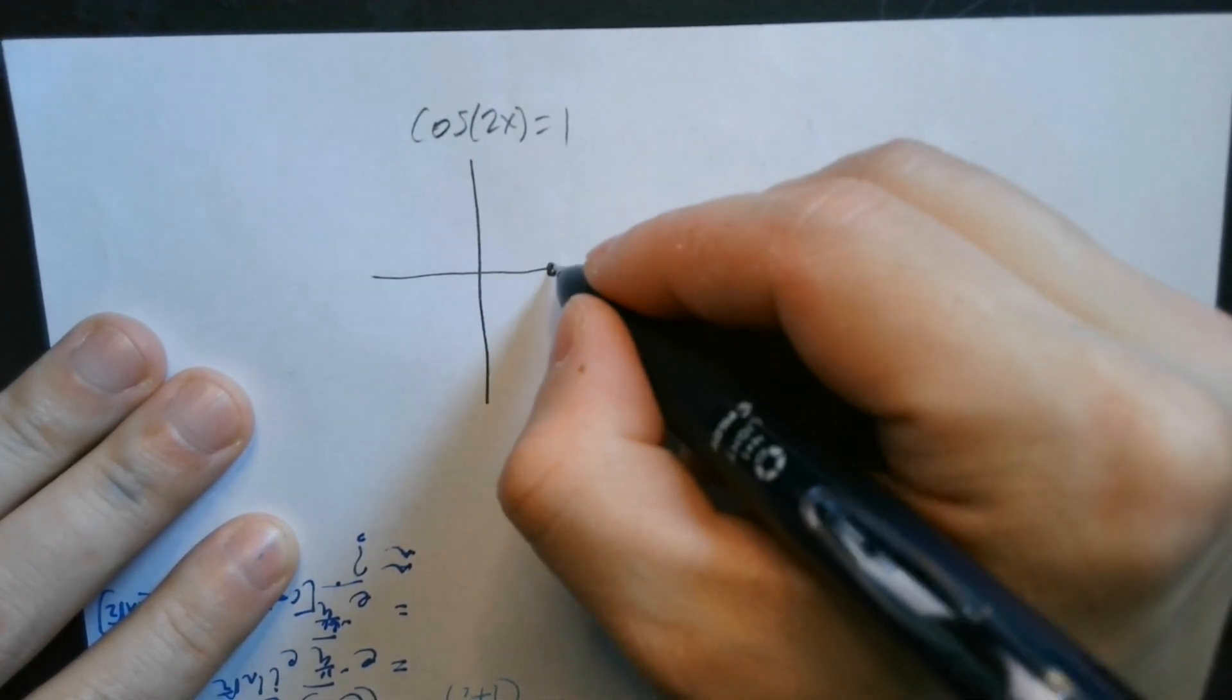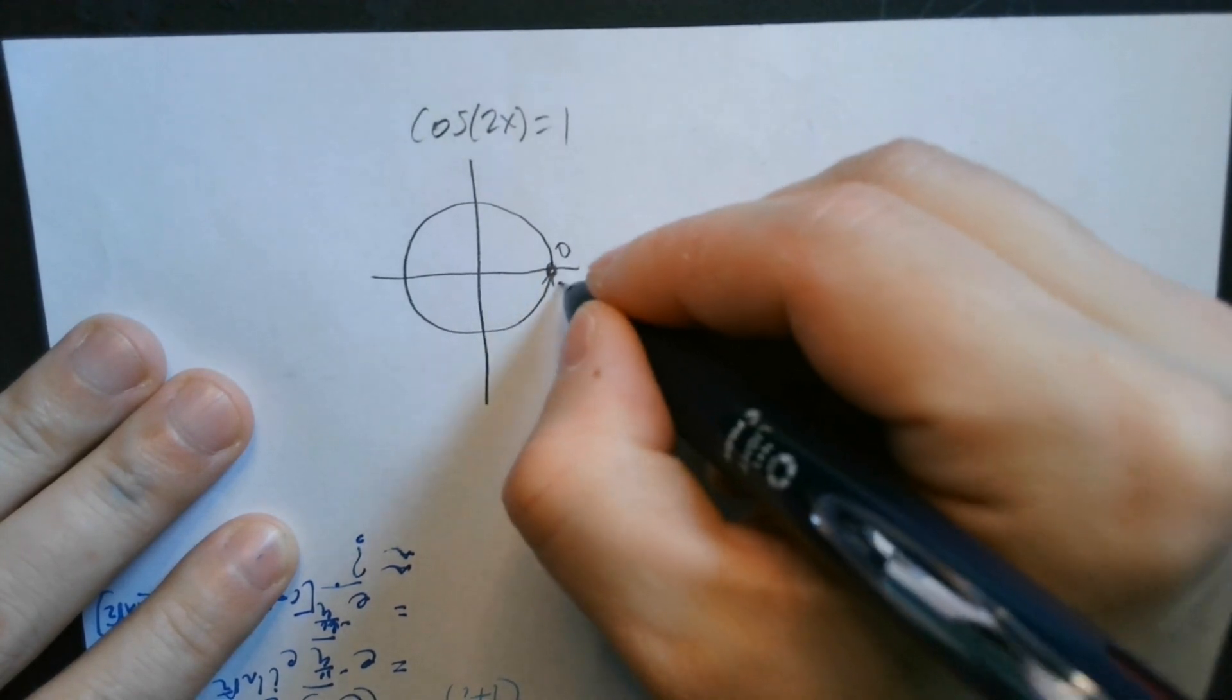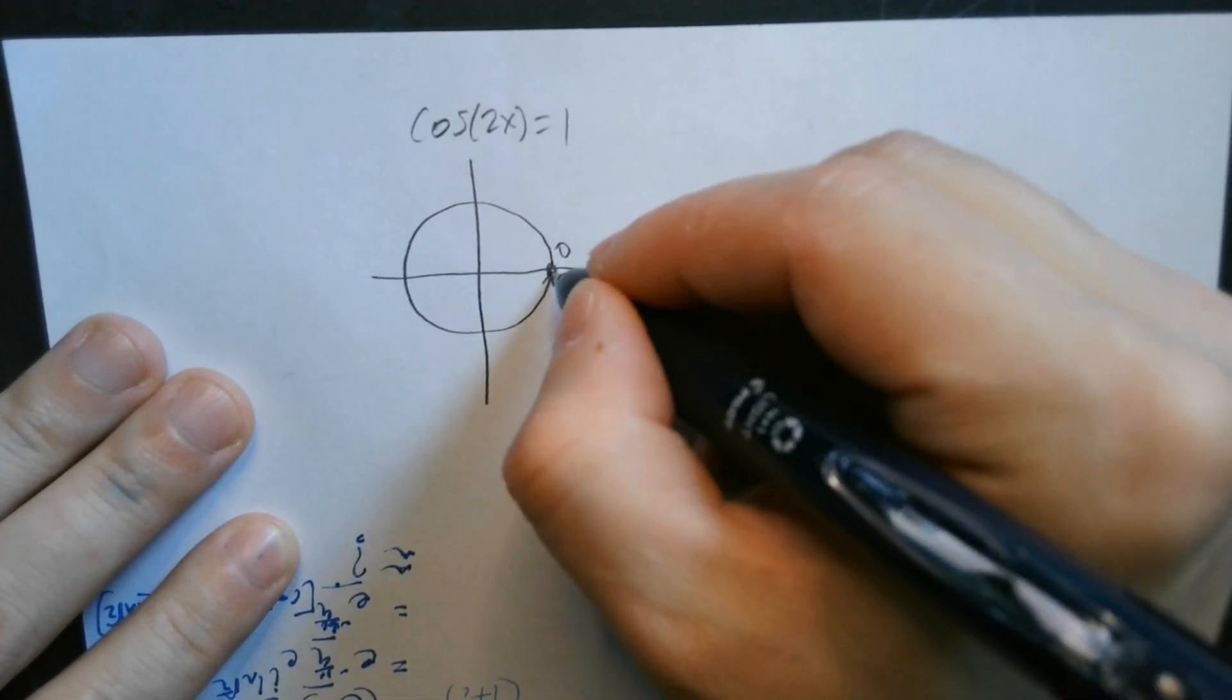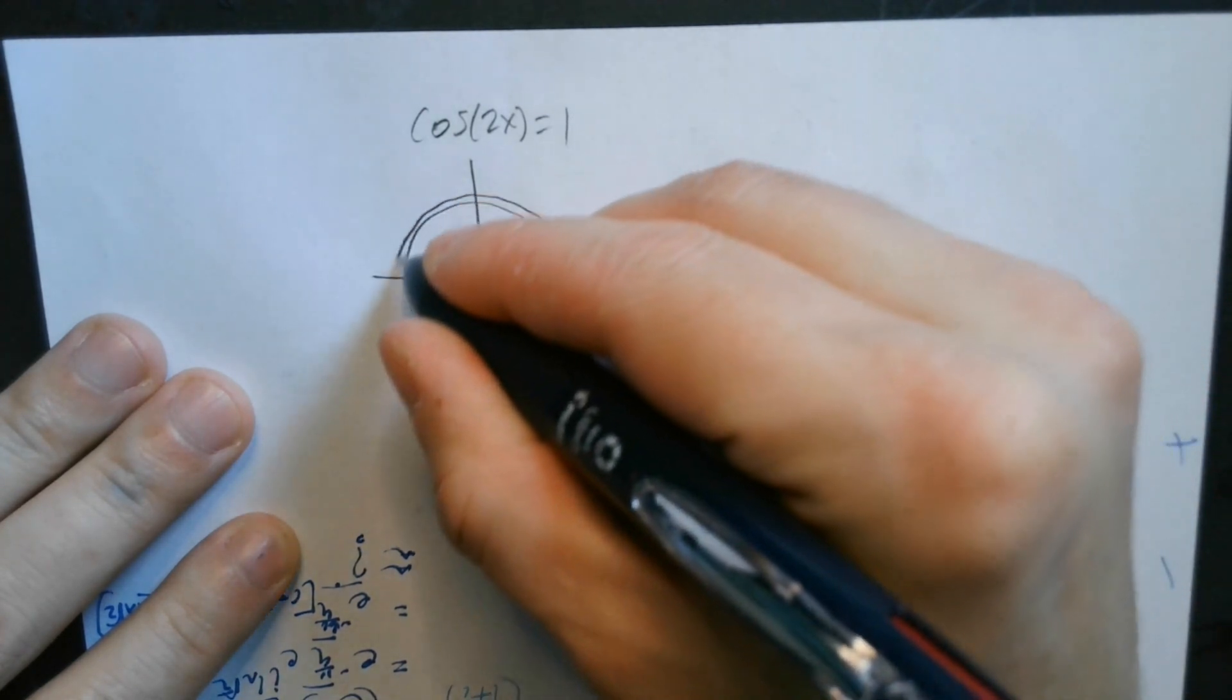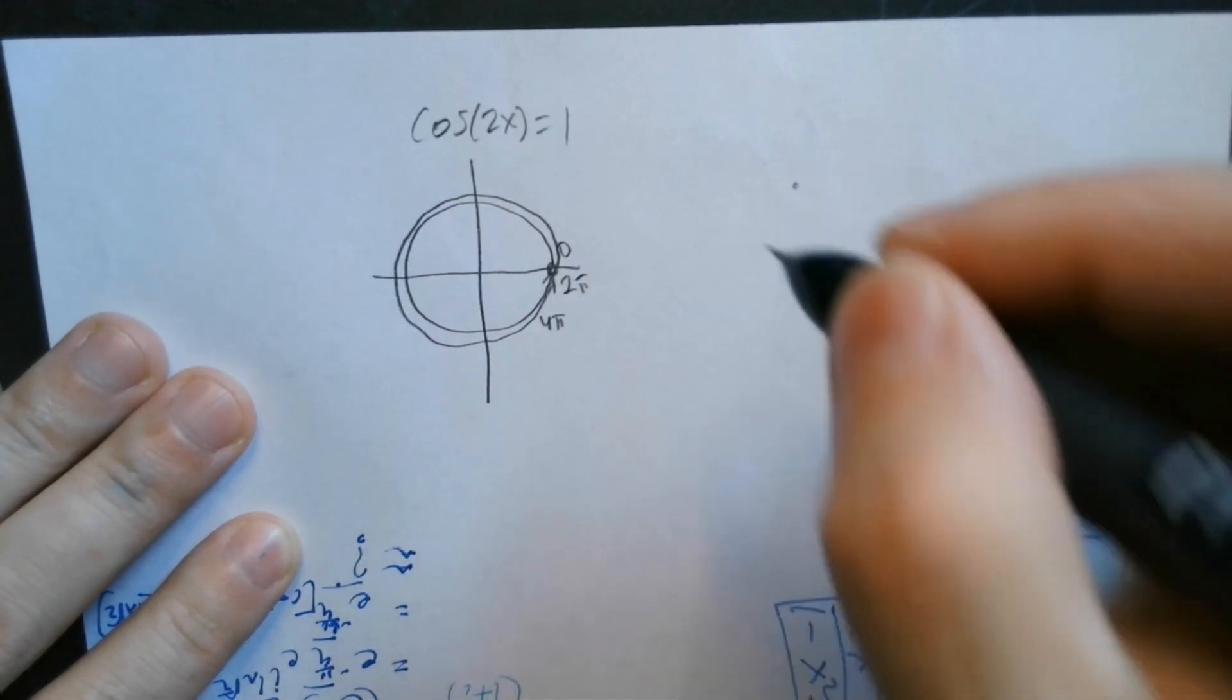Begin here, and then you spin once around, for example. This is 0 degrees when you come back, it's 2 pi radians or 0 radians, but then you can just continue to spin and come back, so it's going to be 4 pi radians and so on.